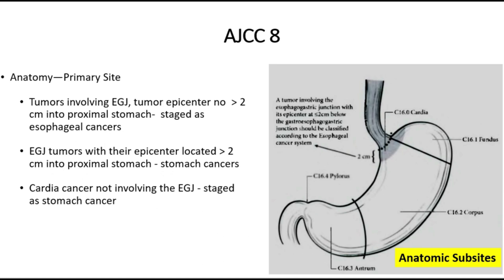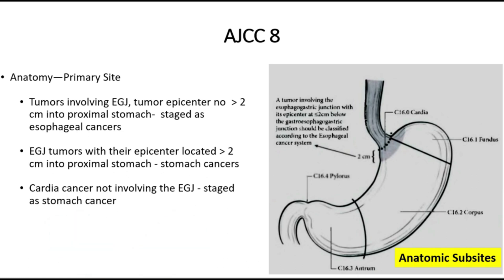As per AJCC-8, a tumor involving the oesophagogastric junction with tumor epicenter no more than 2 cm into the proximal stomach is staged as oesophageal cancer. This is similar to what we discussed in the proximal gastric video: Siewert type 1 and type 2 are staged and treated as oesophageal cancer. While oesophagogastric junction tumors with epicenter located more than 2 cm into the proximal stomach are staged and managed as per the guidelines for gastric cancer. So Siewert type 1 and type 2 are managed as oesophageal cancer and Siewert type 3 as per gastric cancer.